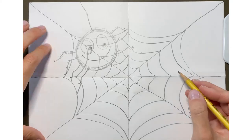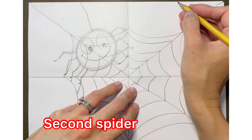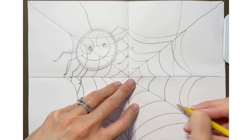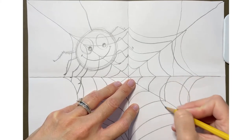Okay and now let's make the second spider. We want it to come out from somewhere here and draw him on this side.